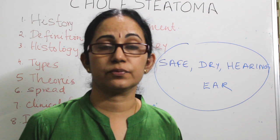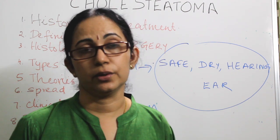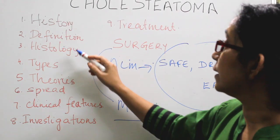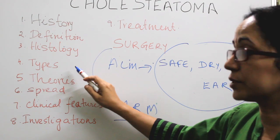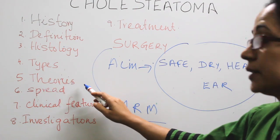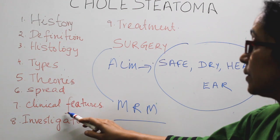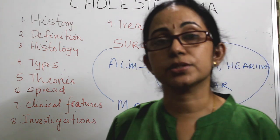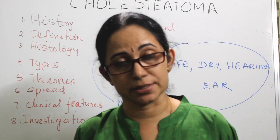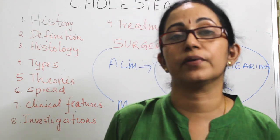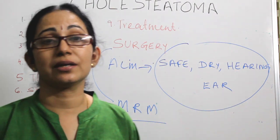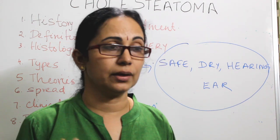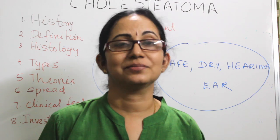The type of surgery depends on the age of the patient, extent of cholesteatoma, eustachian tube function, presence of complications, and the patient's willingness for follow-up. In summary, we covered the history, definition, histology, types, theories, spread, clinical features, investigation, and treatment of cholesteatoma. The mainstay of treatment is surgery, most commonly modified radical mastoidectomy. Cholesteatoma is an important topic for both theory exams and clinical practice. Thank you.